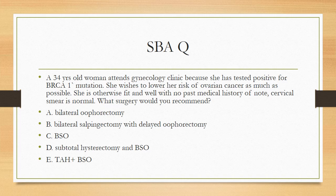Single best answer MCQ 1: A 34-year-old woman attends the gynaecology clinic because she has tested positive for BRCA1 mutation. She wishes to lower her risk of ovarian cancer as much as possible. She is otherwise fit and well with no past medical history of note. Cervical smear is normal. What surgery would you recommend? A — bilateral oophorectomy; B — bilateral salpingectomy with delayed oophorectomy; C — bilateral salpingo-oophorectomy; D — subtotal hysterectomy and bilateral salpingo-oophorectomy; E — total abdominal hysterectomy and bilateral salpingo-oophorectomy. Choose the best answer.